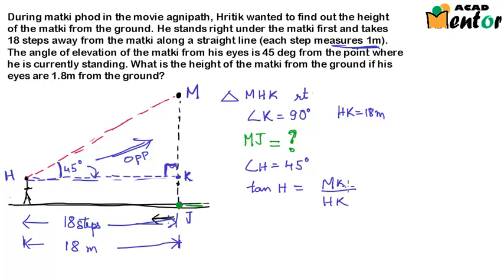Do we agree with this? This is the opposite side by the adjacent side and angle H here is 45 degrees. So this becomes tan 45 degrees is equal to MK is unknown and HK is known as 18 meters. So 18 meters and tan 45 degrees is nothing but 1. So MK from this relationship can be written as 18 meters.